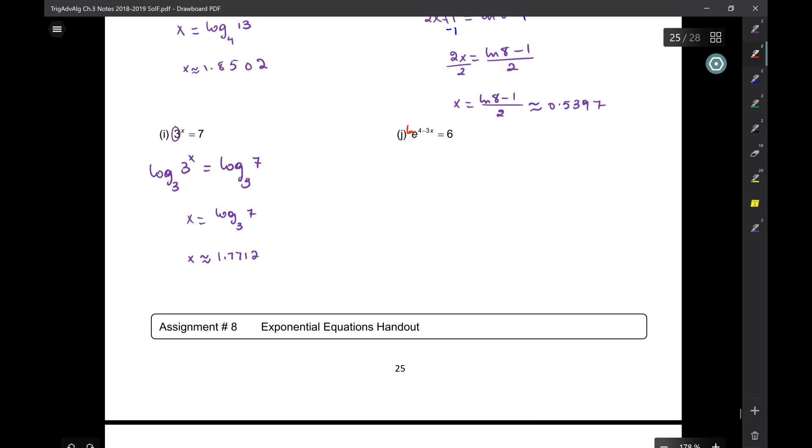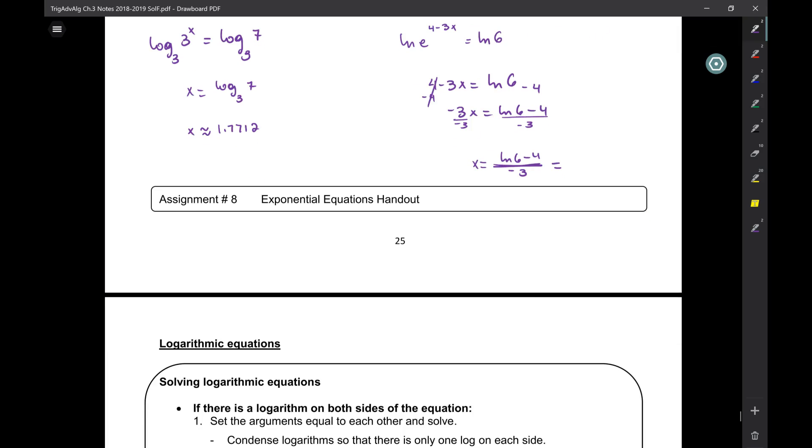So here, if the base is E, what logarithm do we take? LN. So LN of E to the four minus three X equals LN of six. LN of E is going to cancel one another. So four minus three X is LN of six. What now? Subtract four. Divide by negative three. X is LN of six minus four over negative three. No, it's minus four separately. LN of six, close parentheses, minus four. The whole thing divided by negative three. It's 0.7361.